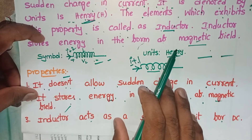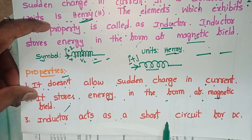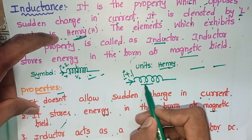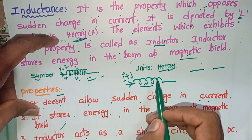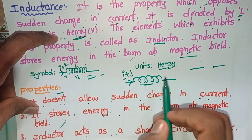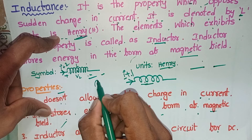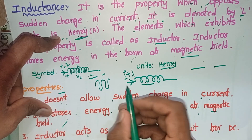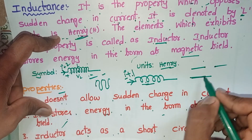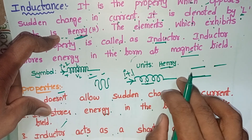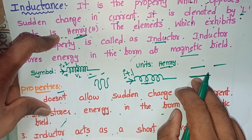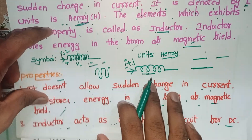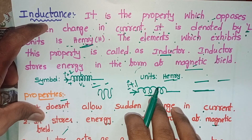The third property is: inductor acts as a short circuit for DC. Why? Whenever a sudden change of current occurs in the inductor, only then will it act as an open circuit. For AC current, at each instant the current changes — that is the sudden change of current. But for DC current, there is no change in the current. That's why the inductor acts as a short circuit or perfect conductor for DC.